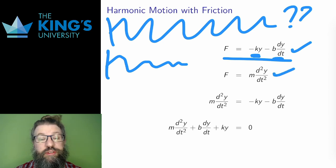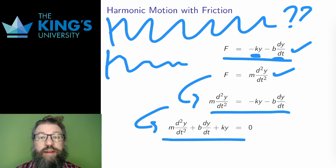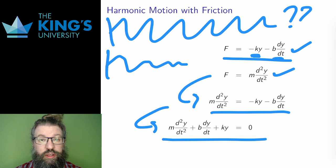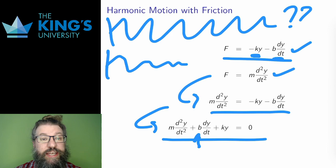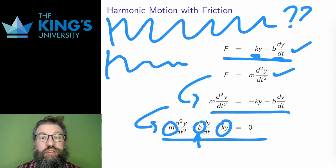With the other pieces as before — Newton's law and the equation where the forces are made equal — if I bring everything to the left, I get a new homogeneous SOCCLD. Now it does have a middle term, and I can interpret the coefficient b: it is the coefficient of friction. A second-order constant coefficient linear differential equation has three constant coefficients, and now they all have interpretations. The first is mass, the second is the coefficient of friction, and the third is the spring constant. I'm going to use this interpretation heavily for the next number of videos.